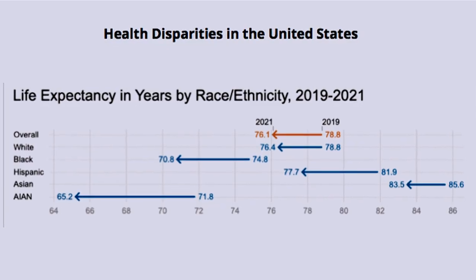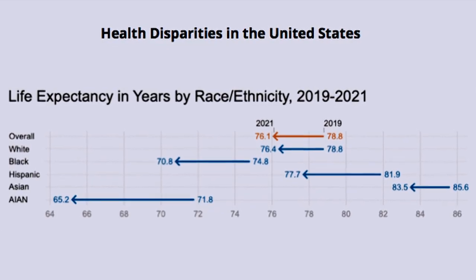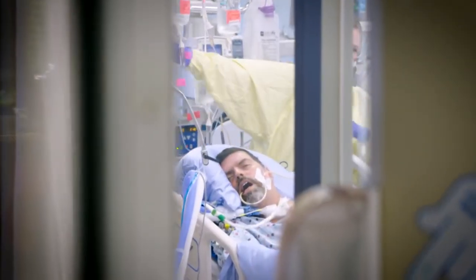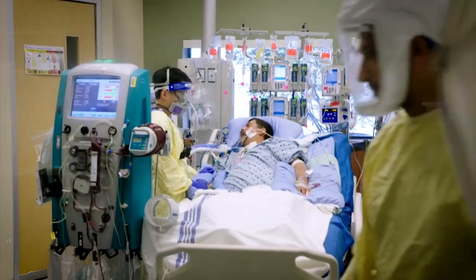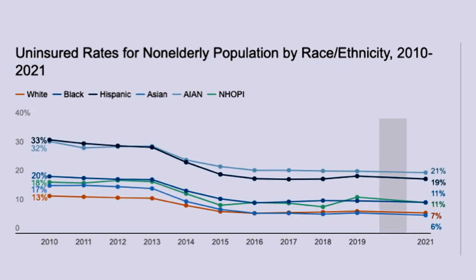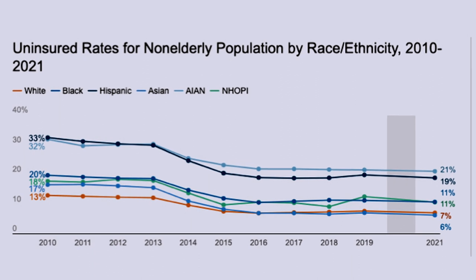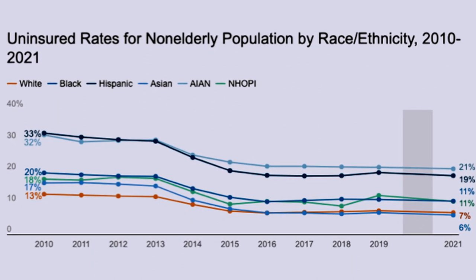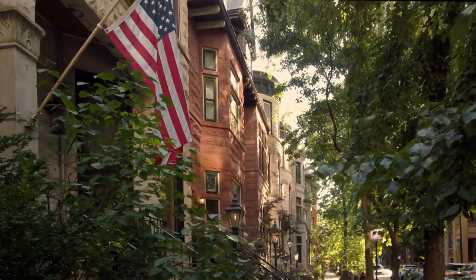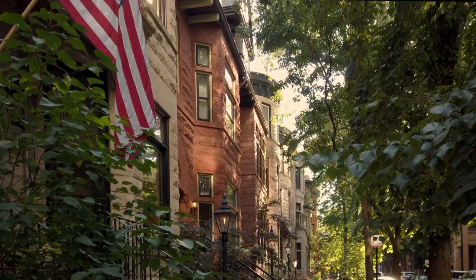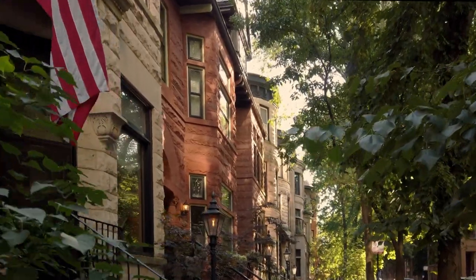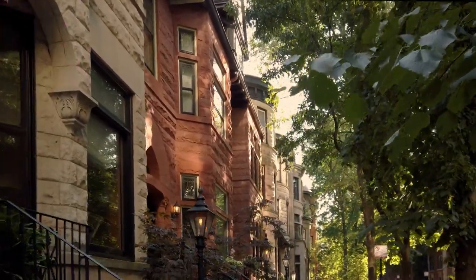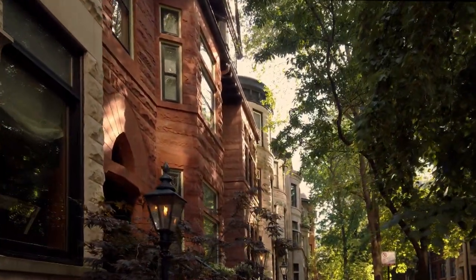Health disparities in the United States are well documented. The life expectancy of Blacks and Hispanics in the U.S. is lower, and there is a high percentage of Blacks and Hispanics that are uninsured. There are reports that in the U.S., your zip code can carry more weight on your health outcomes than your genetic code.